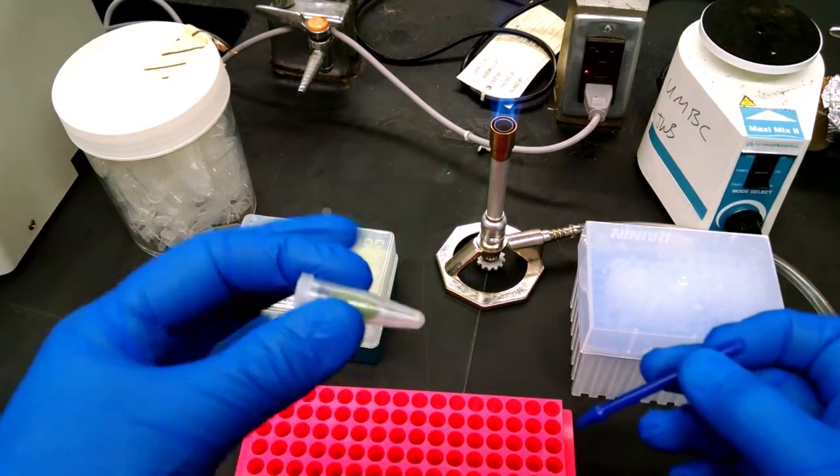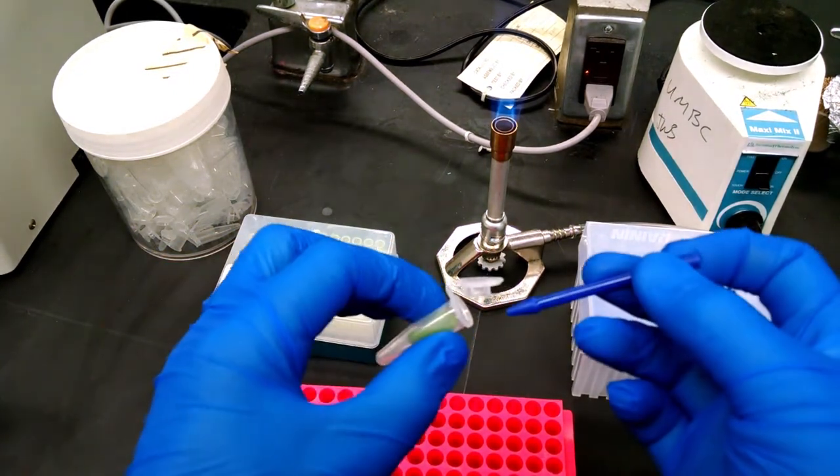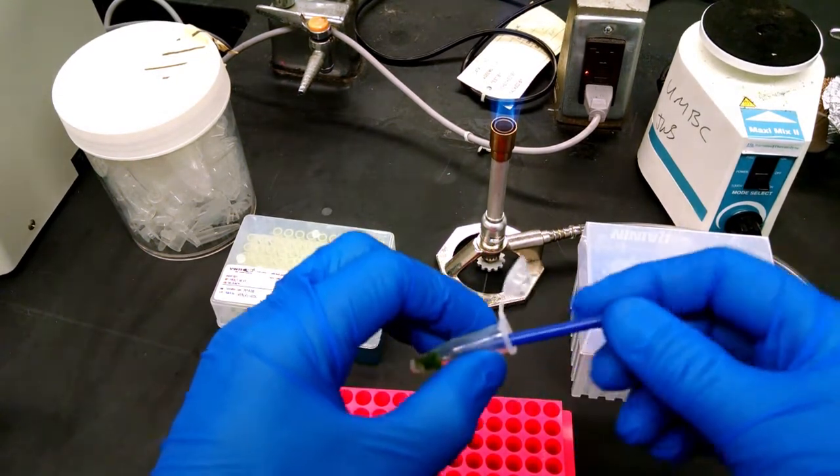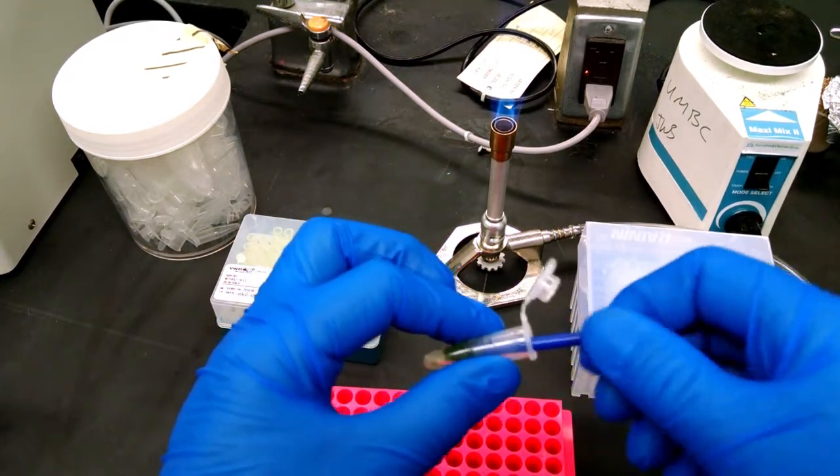And what you're going to do is, with nothing in here but the leaf, you're going to take your pestle and just grind your leaf into tiny little fragments.